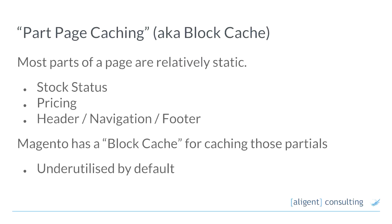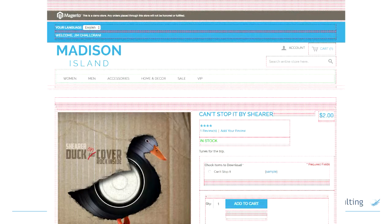So can we apply some of the same ideas here? A lot of the parts of the page are relatively unchangeable — the navigation, the header, the pricing on a product. Can we go about caching a lot of those individual pieces? Magento has a thing called a block cache that's designed to do exactly that. It's really underutilised by default. The significance of all the red in that screenshot is that those blocks are not actually being cached in the block cache.